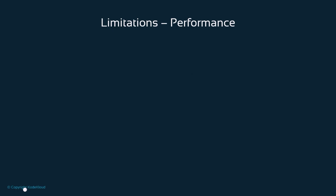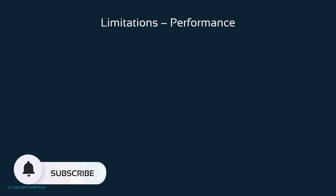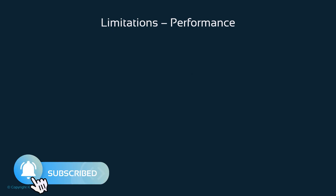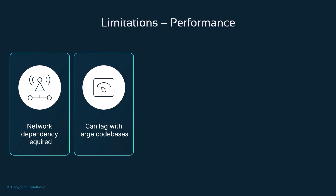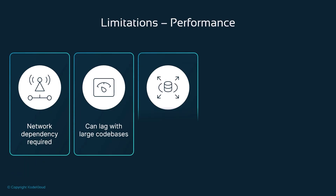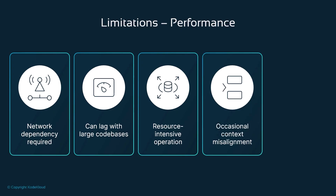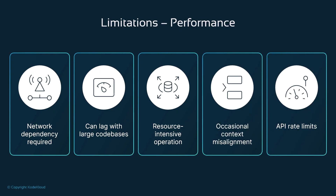But it's crucial to understand Copilot's limitations. It requires a stable internet connection, it can slow down with large code bases, and uses significant computational resources. Sometimes it misunderstands context, and there are API rate limits to consider.